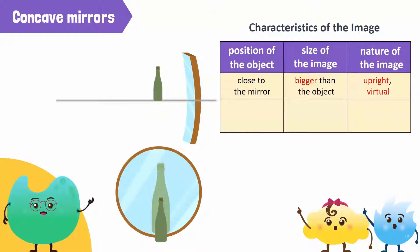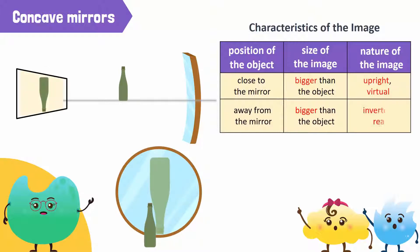Let's move the bottle away from the mirror. We see the bottle in the mirror growing bigger. What about the nature of the image? It is inverted and a real image, but it is upside down instead of laterally inverted.